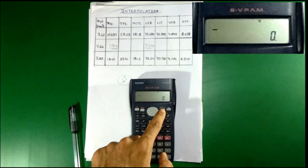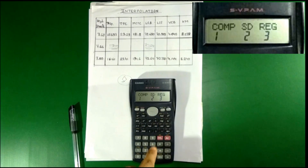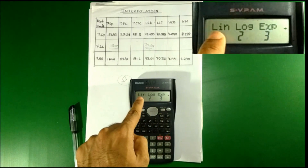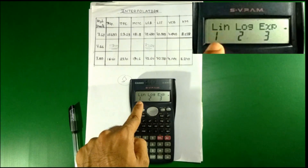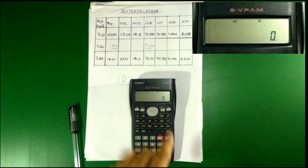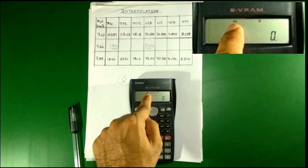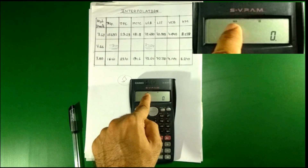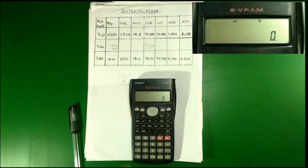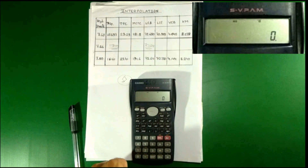Now again press Mode and press 3 to select REG, and then press 1 to select Linear. You can now see the symbol of REG on the screen. Now you will put the values.